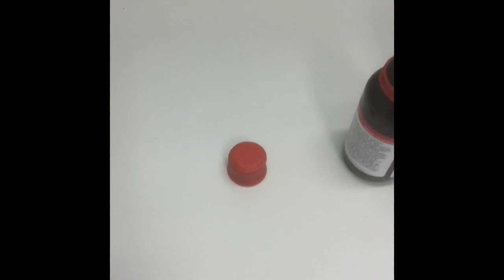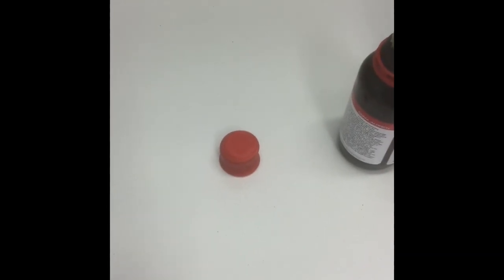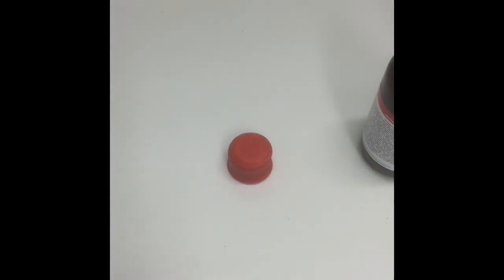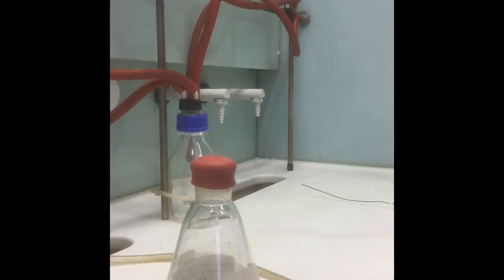More often you will encounter super seals on lab-prepared dry solvents or on your reaction flasks. The area to insert your needle is marked by a circle on the top of the super seal, as shown here.